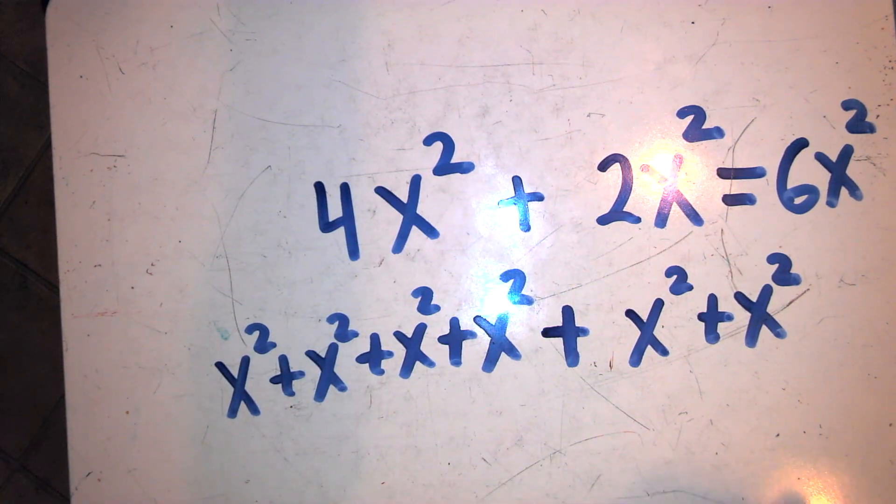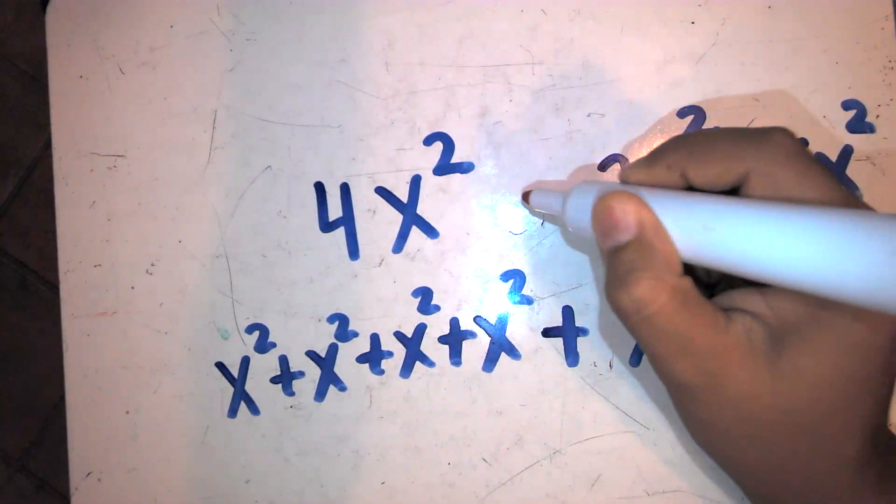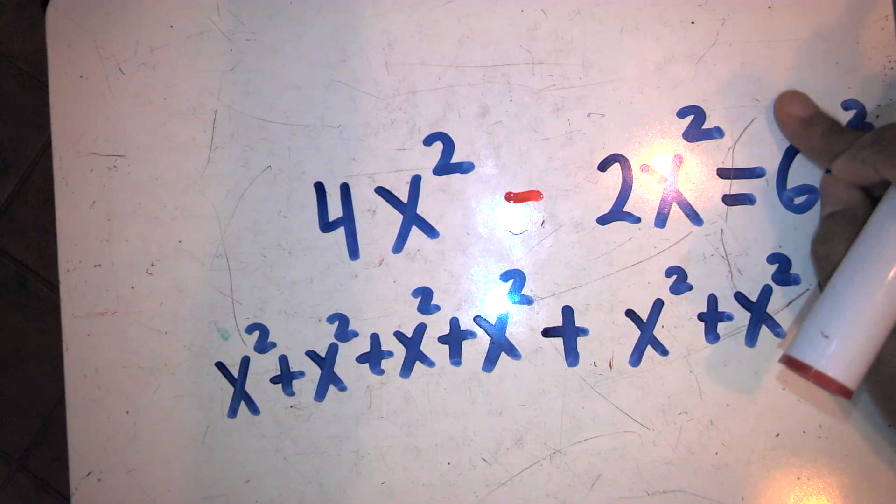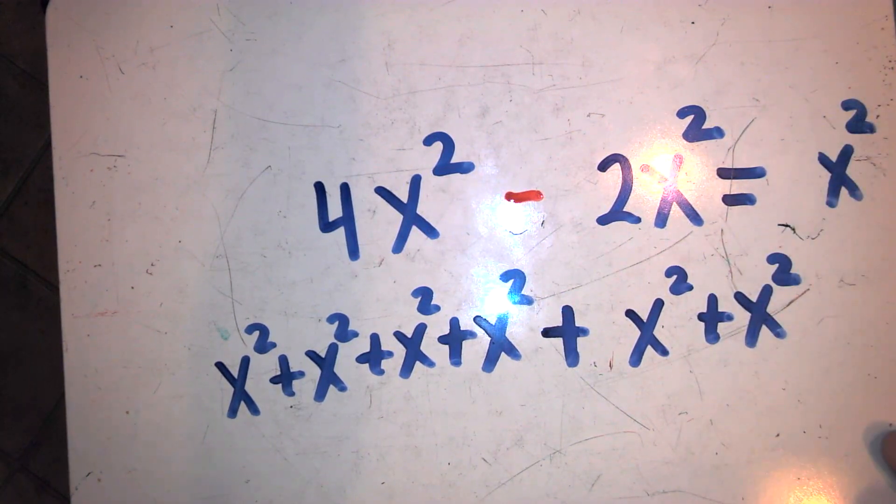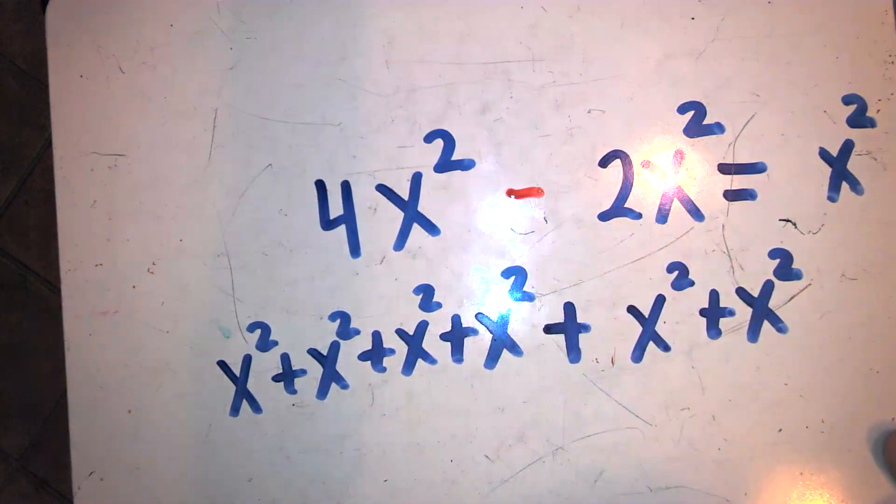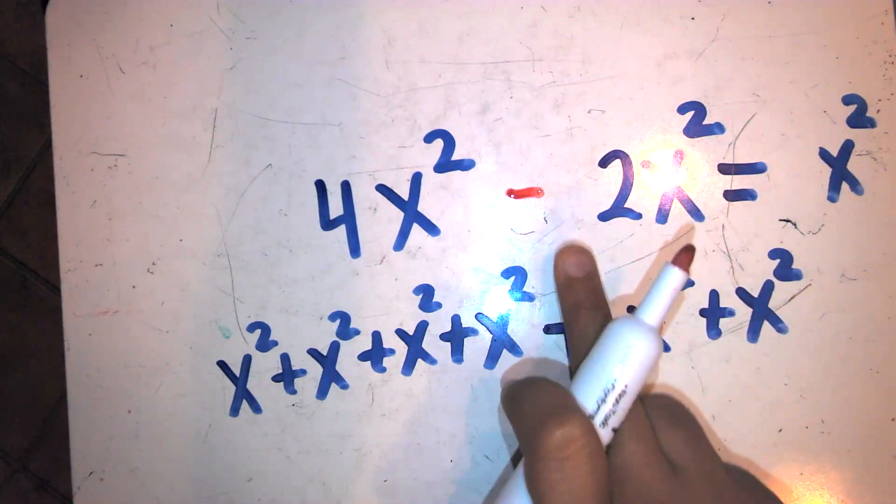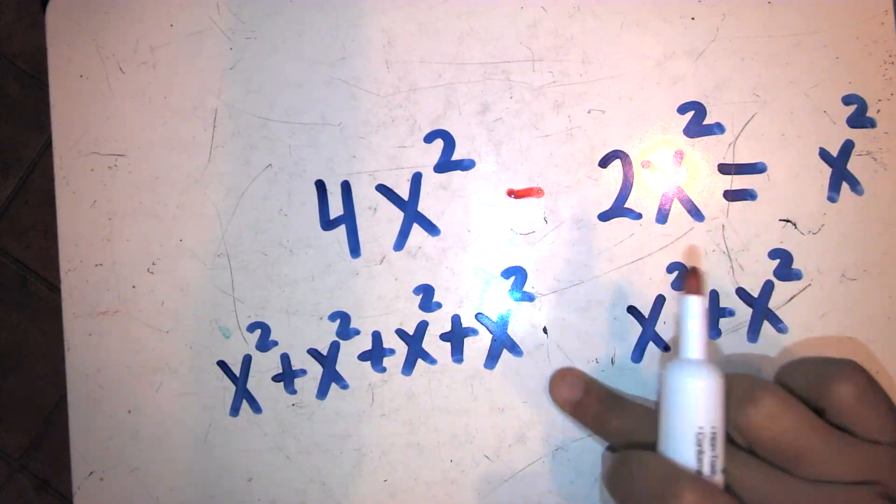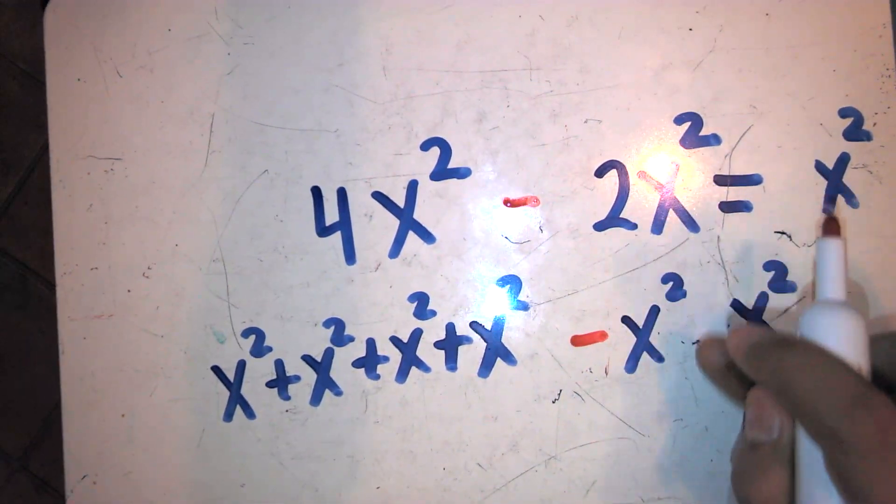Now, what happens if there's subtraction? It works in a similar way. Except now, I have negative two groups of x squares, or you can say I'm taking away two groups of x squares.